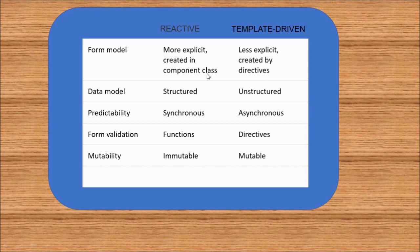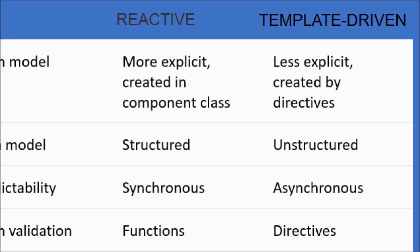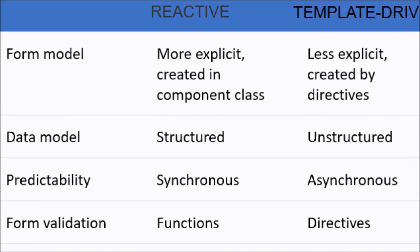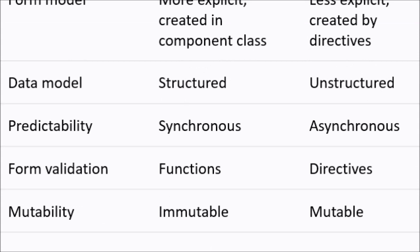Now after seeing the setup for both reactive and template-driven forms, let's revisit the chart. The form model of reactive forms is more explicit since it is created in the component class, while in template-driven forms it is less explicit since it is created by directives. The data model in reactive forms is structured; in template-driven forms it is unstructured. Reactive forms are synchronous; template-driven forms are asynchronous. For validation, reactive forms support functions while template-driven forms support directives. Reactive forms are immutable — they return a completely new state — while template-driven forms are mutable since they depend on directives.